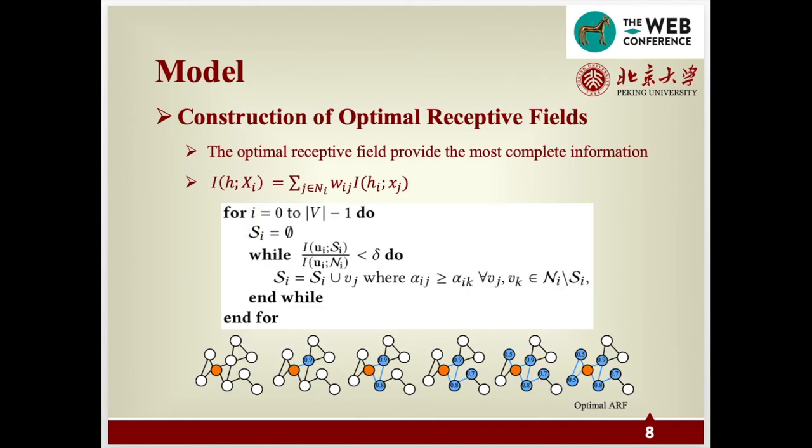Considering that the optimal receptive field should provide the most information for the central node, and the mutual information value expresses the information that the central node gains from the neighborhood. Specifically, when the information gain of a neighbor to the central node is greater, it means that it is more important to the central node and should be emphasized. Otherwise, it is more likely to be noise or should be ignored. With the help of mutual information, we define the information gain ratio as the ratio of information gain provided by a receptive field S to the gain by the whole neighborhood N I.